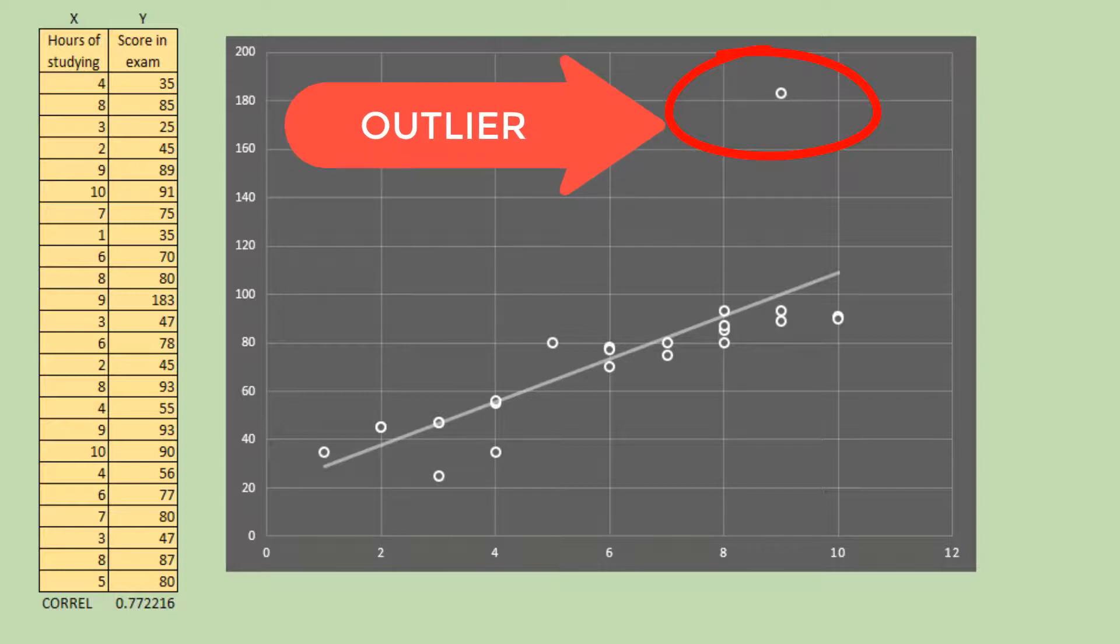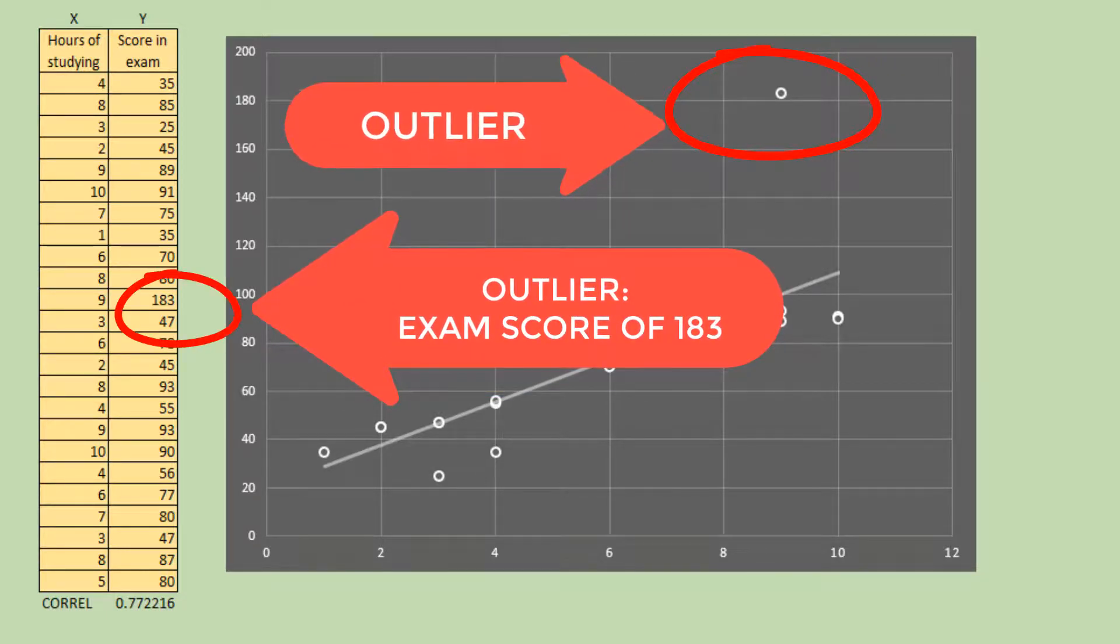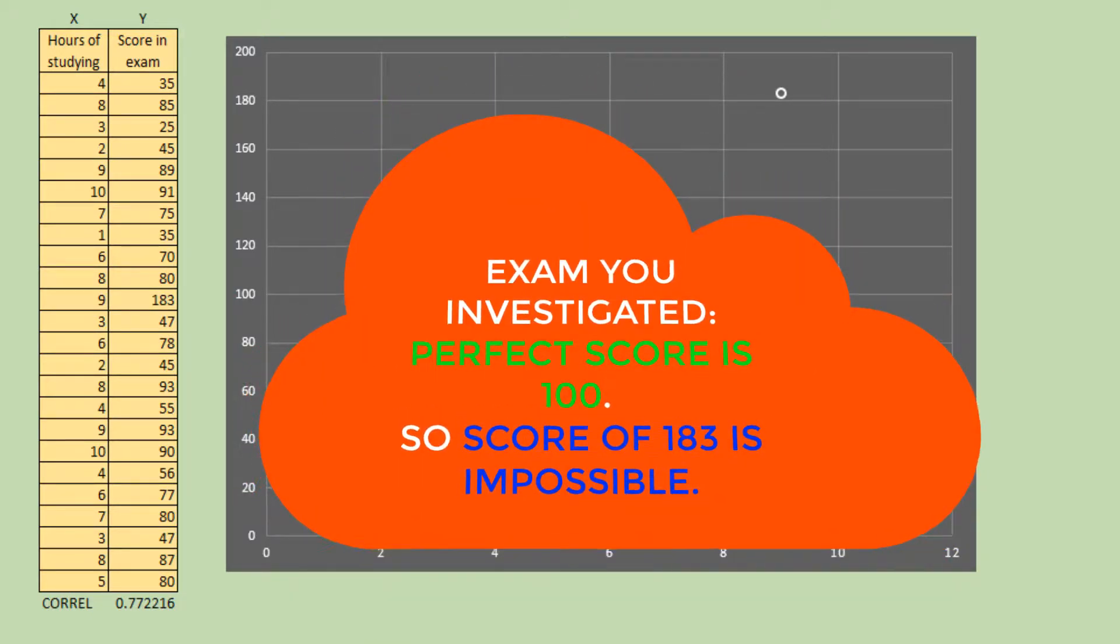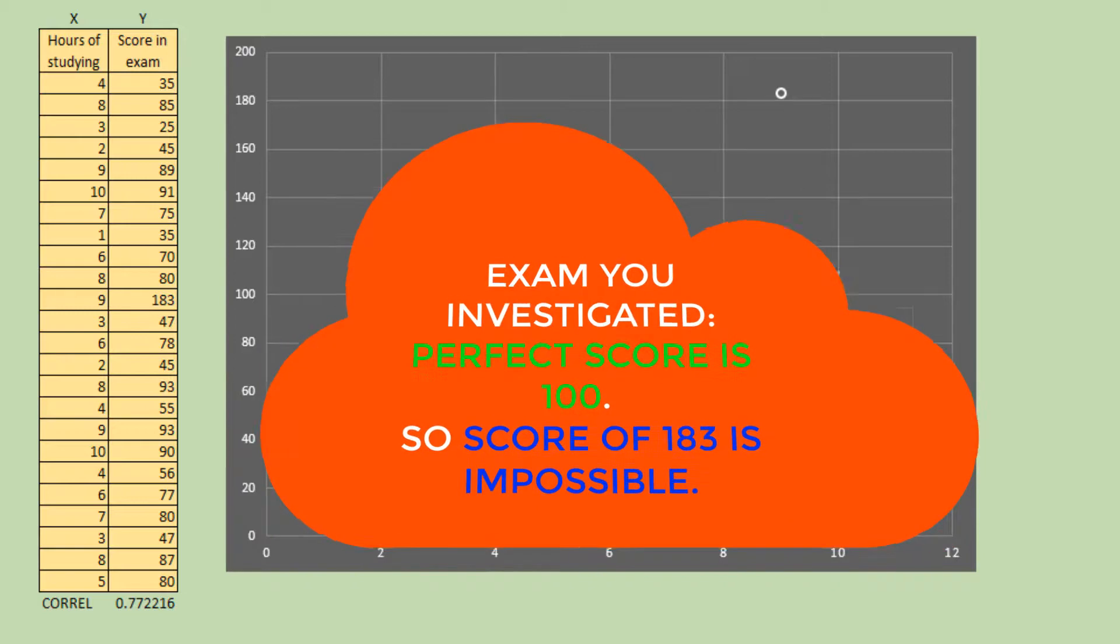Looking at the data, this pertains to a score of 183. You already knew that the exam you investigated has a perfect score of 100, so it is impossible to have a score of 183.